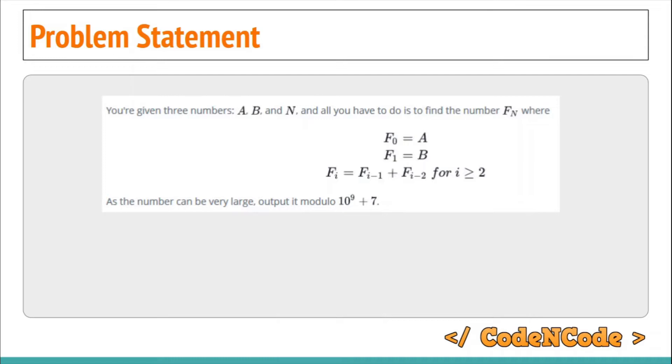We have to print the nth term modulo 10^9 + 7, because the Fibonacci series grows exponentially.